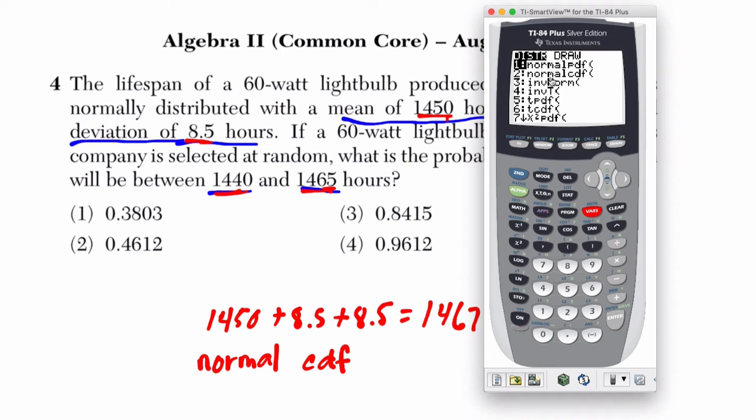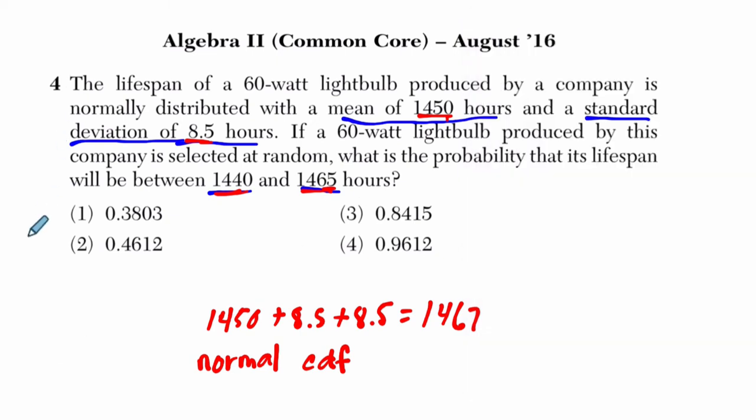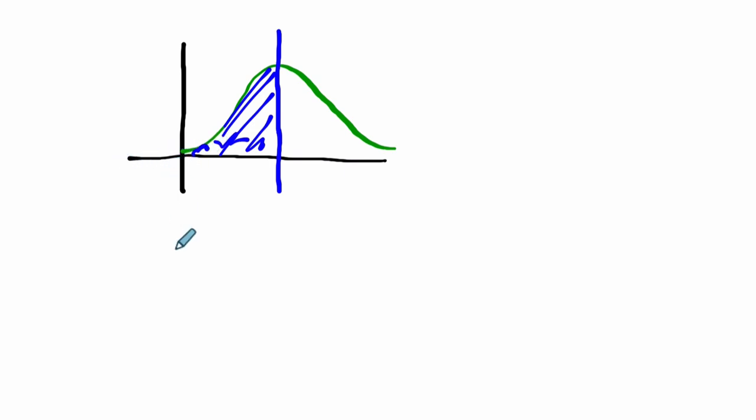You press 2nd, VARS, and there's normal CDF right here. We have our lower bound and upper bound. Now you see here I have negative 1E99, that means negative 1 times 10 to the 99. That's for a situation where you have a normal distribution - if you had the mean right here and I wanted to find everything below it, everything less than the mean, this goes on forever. So the smallest number you can put in the calculator is negative 1 times 10 to the 99th. That would be your lower bound when you're trying to find everything below the mean.